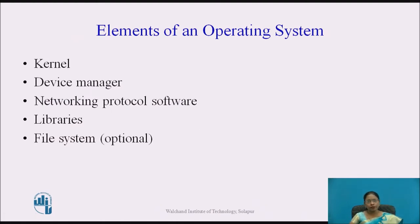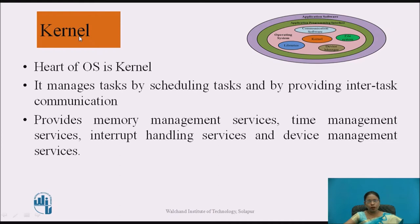The elements of the operating system are: kernel, device manager, communication software which is networking protocol software, libraries, and file system — where file system is optional, which I will explain. The kernel is the heart of the operating system. It manages tasks by scheduling them and providing intertask communication. It also provides memory management services, time management services, interrupt handling services, and device management services — so it performs very crucial tasks, which is why it is called the heart of the OS.